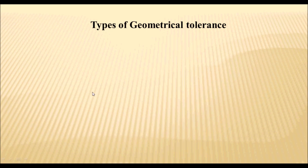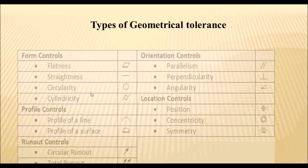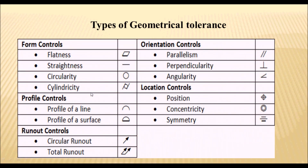Next, types of geometrical tolerance. There are five types: form tolerance, profile tolerance, run out tolerance, orientation tolerance, and location tolerance. There are basically 14 symbols for geometrical tolerance. Under form tolerance, there are four types: flatness, straightness, circularity, and cylindricity, with their respective symbols. Under profile tolerance, we have two types: profile of a line and profile of a surface, with their symbols.